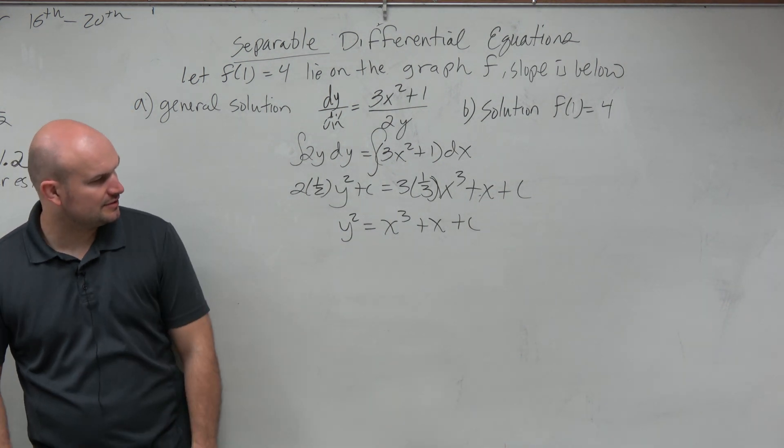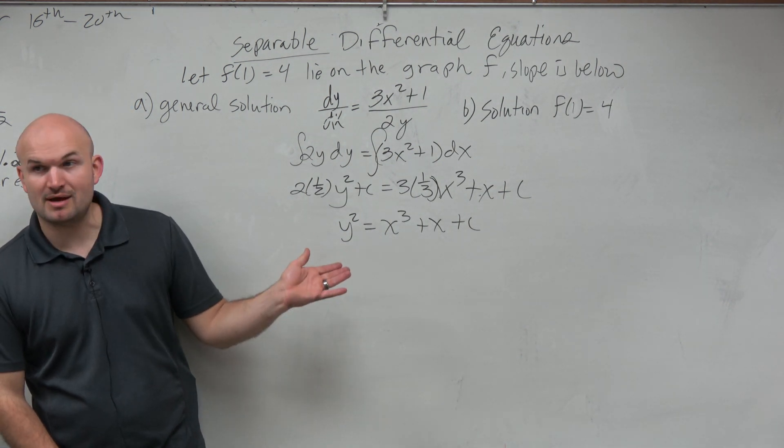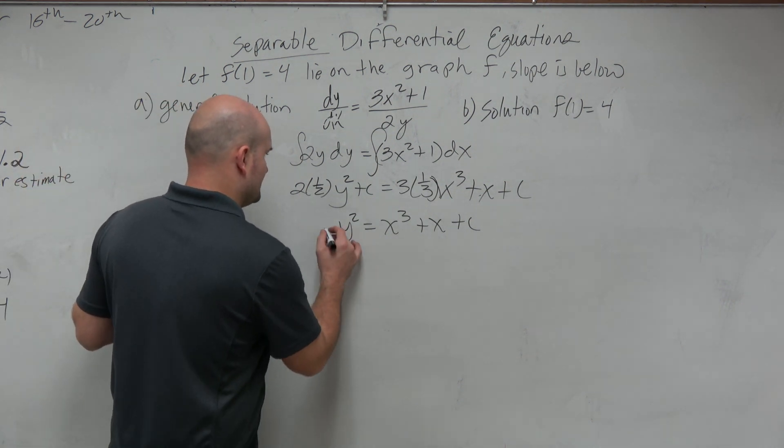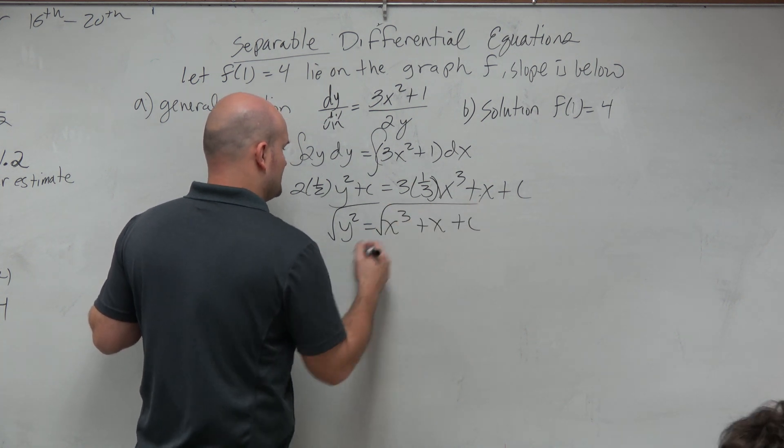So now we're going to do the, so now we've got to solve for y though, right? OK. So that's not too bad. Now all I'm going to do is undo the square, and I'm going to take the square root of both sides.